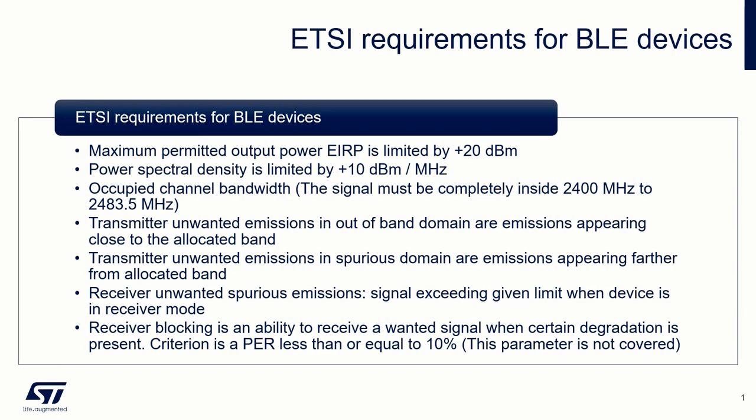Occupied channel bandwidth is the bandwidth containing 99% of the signal. It must be completely inside the Bluetooth band from 2400 MHz to 2483.5 MHz. Transmitted unwanted emissions in the out-of-band domain are emissions appearing close to the allocated band when the device is transmitting; the band is specified by an appropriate table.